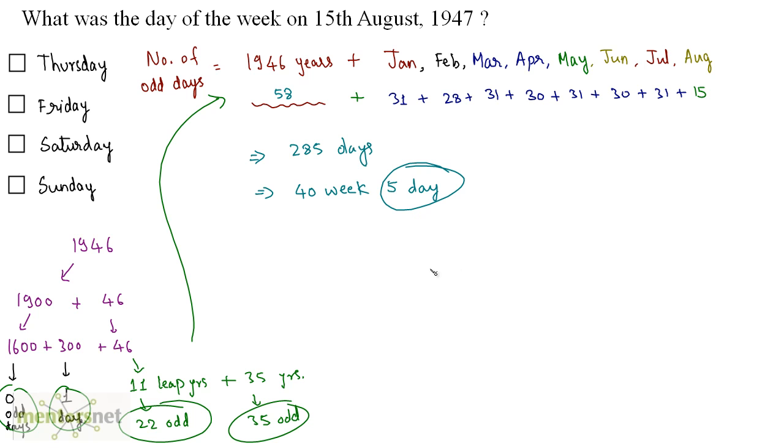So what will be the day? We start from 0. 0 is Sunday, 1 is Monday, 2 is Tuesday, 3 is Wednesday, 4 is Thursday and 5 is Friday. So Friday was the day on 15th August 1947. So option B is the correct answer.